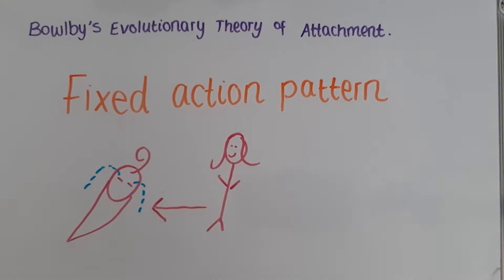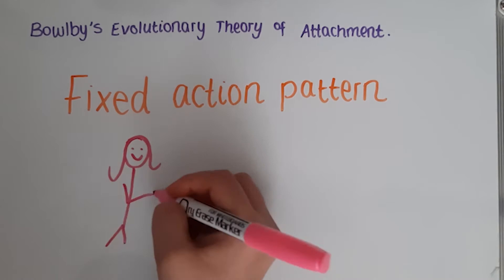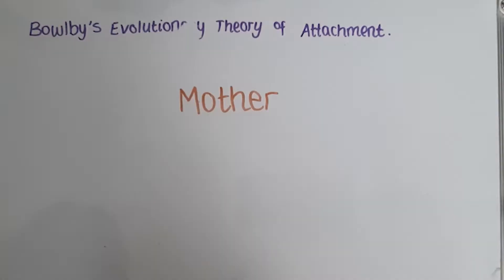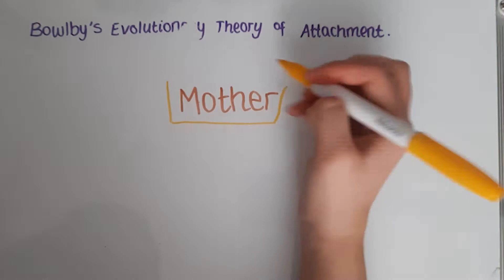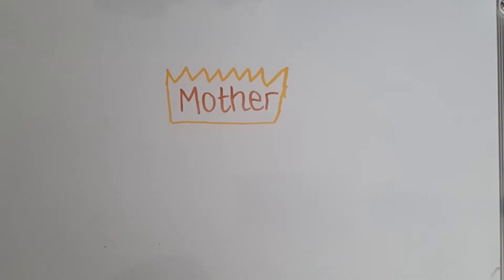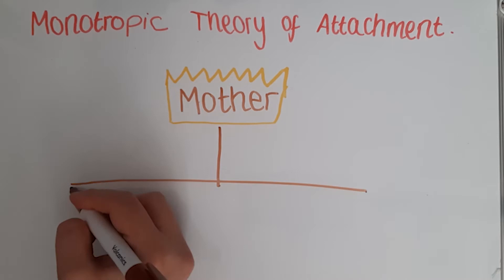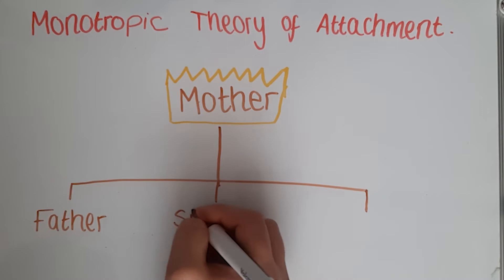Although Bowlby did not rule out the possibility of other attachment figures for a child, he did believe that there should be a primary bond which was much more important than any other. In Bowlby's eyes, this was the mother. Bowlby argued that the relationship with the mother is somehow different altogether from any other relationships. This is known as Bowlby's monotropic theory of attachment. He believed attachments may develop in a hierarchy below this. An infant may therefore have a primary monotropy attachment to its mother, and below her the hierarchy of attachments may include its father, its siblings, or its grandparents, etc.